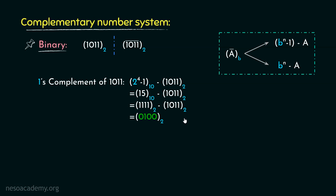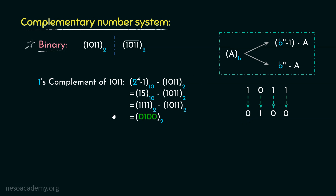In order to obtain the 1's complement, all we have to do is take the number and toggle every bit of it. That means this 1 would be 0, then this 1 would also be 0, then 0 will become 1, and at last this 1 will become 0. So instead of going through all these hassles, we can obtain the diminished radix complement of any binary number just by toggling the bits of it.